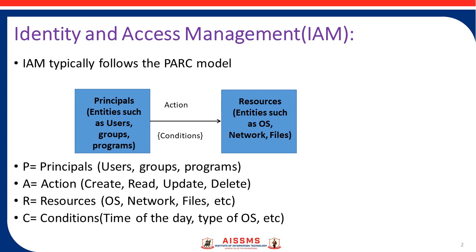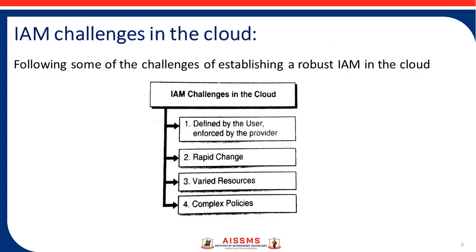R is the Resources — that is OS, operating system, networks, different editors, files, etc. C is the Conditions — time of the day and type of OS, etc. This diagram shows us the actions and conditions, what is in the Principals, and what are the resources.